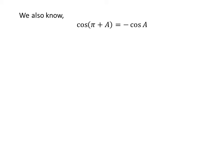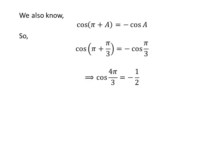We also know the famous trigonometry identity cosine of pi plus a is equal to minus cosine of a. Applying the identity as before, we get cosine of 4 times pi upon 3 is equal to minus half.